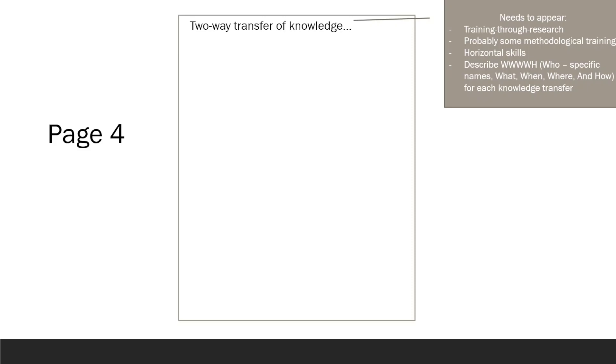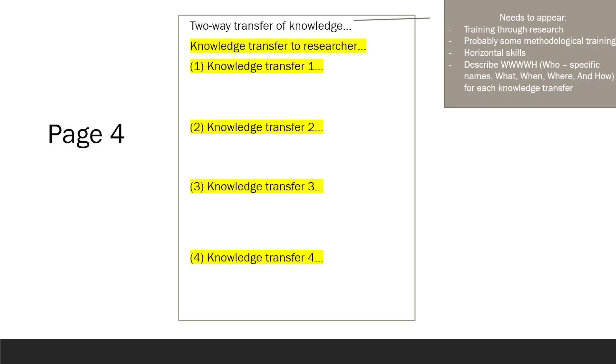Devote the entire page 4 to knowledge transfer to the researcher. Come up with three to four knowledge transfers which could include training through research, methodological training, horizontal skills development, and more. For each of these transfers, you need to describe the following: who, what, when, where, and how it will happen. Specify the individuals providing the training by giving their names. Explain what will be learned and provide specific details on how this learning will be achieved.